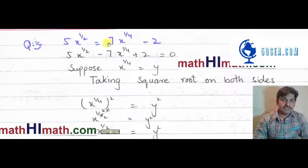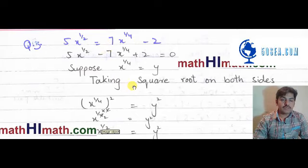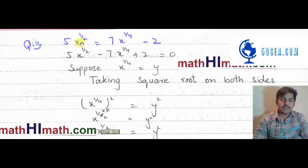Hello everyone, it's me Sayyid Muhammad As-Nazab from Mathemas.com. Let's start with question number 3 of exercise 1.3. The statement of the question is: 5 into x raised to power 1 over 2 is equal to 7 into x raised to power 1 over 4 minus 2.